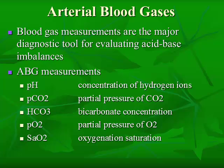Let's look at arterial blood gases. Blood gas measurements are the major diagnostic tool for evaluating acid-base imbalances. The ABG measurements we're going to look at include several parameters: the pH, which is the concentration of hydrogen ions; the PCO2, which is the partial pressure of carbon dioxide; the HCO3, which is your bicarbonate concentration; your PO2, which is your partial pressure of oxygen; and SAO2, which is your oxygen saturation. You also have a base excess. Once you get these five components down, you should be able to fairly accurately determine what an ABG is telling you.